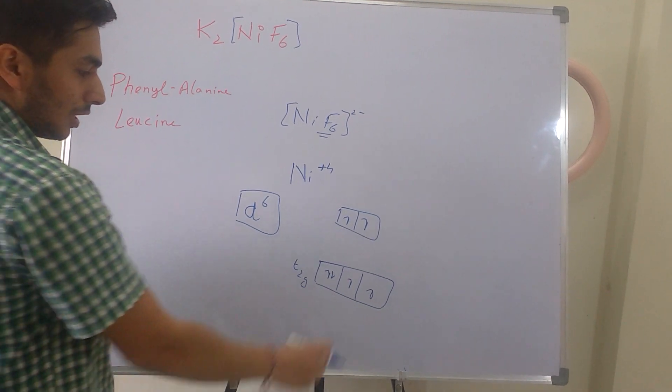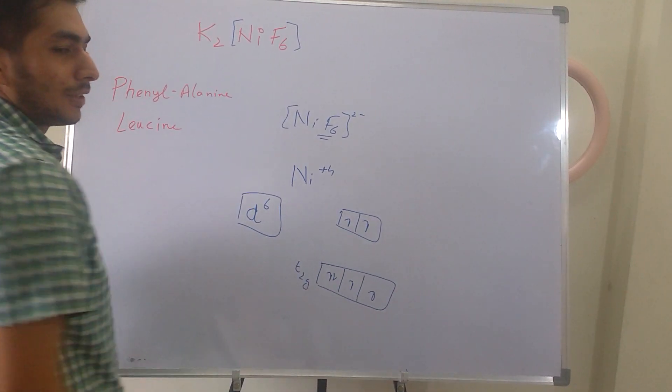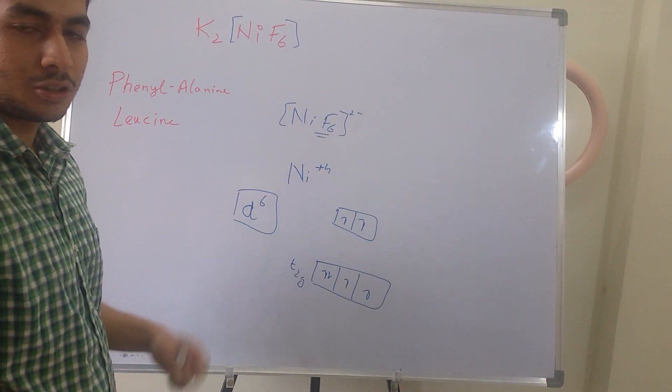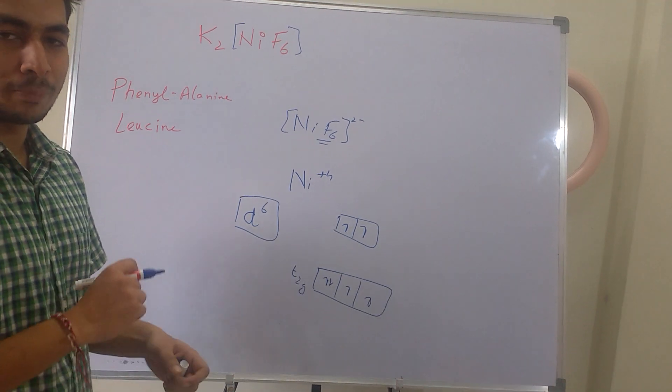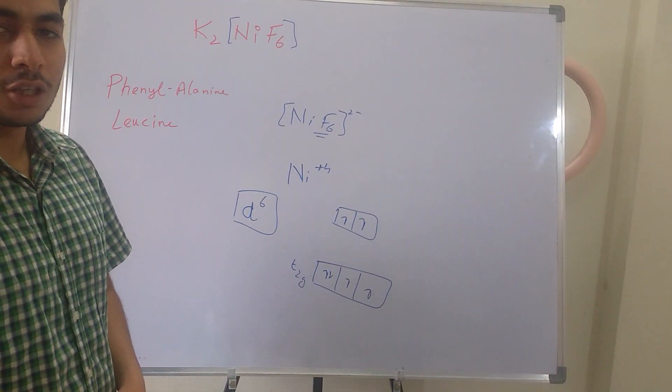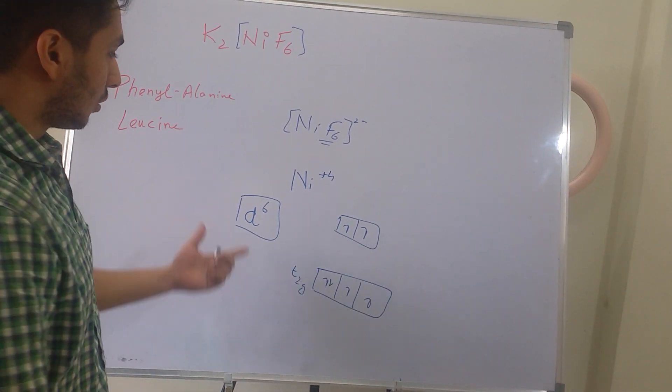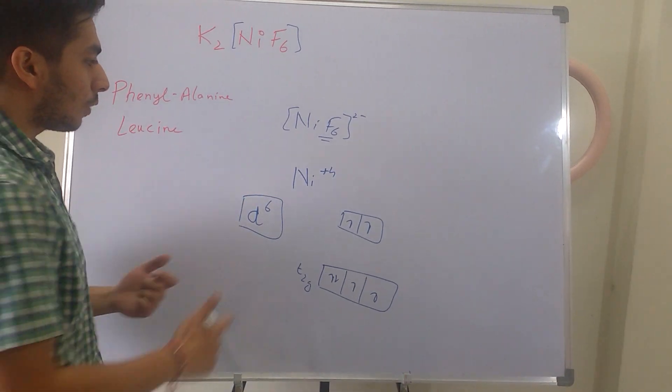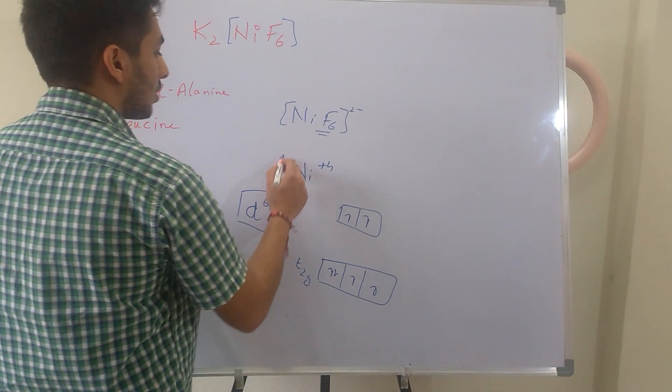So how many unpaired electrons? It looks like 4 unpaired electrons. You might write the answer as 4 unpaired electrons, but that would be absolutely wrong. This is one catch in this question.